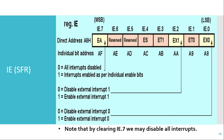The next SFR is the IE SFR, which stands for Interrupt Enable SFR. Using this SFR we can enable or disable individual interrupt signals of all the peripherals. The first bit, the LSB bit, is EX0. This bit is used for enabling or disabling external interrupt 0. If this bit is 1, external interrupt 0 is enabled. If this bit is 0, external interrupt 0 is disabled, so even if the signal occurs it will not generate an interrupt.